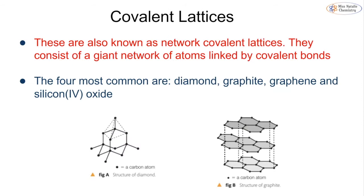We can also get covalent lattices, also called giant covalent or network covalent lattices, which consist of a giant network of atoms all linked by covalent bonds. There are four very common ones: diamond, graphite, graphene, and silicon dioxide. Diamond, graphite, and graphene are all different forms of carbon, whereas silicon dioxide is silicon-based — in the same group — and silicon dioxide is essentially sand.